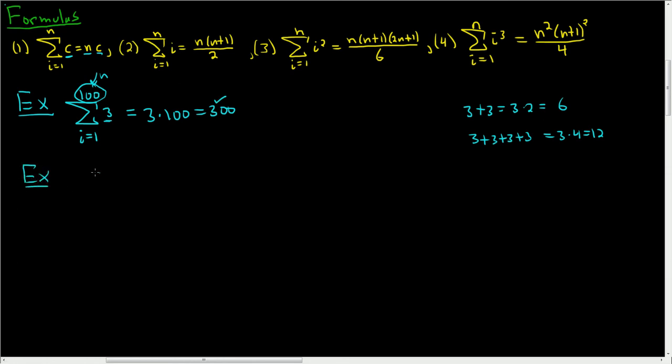What if we had the sum as i runs from 1 to 50 of 6? Well, then it's just 6 times 50, which is 300. Now, a word of warning, the sum has to start at 1. So if it starts at a different number, this formula fails.